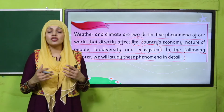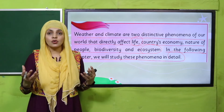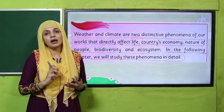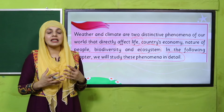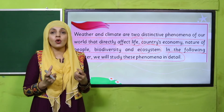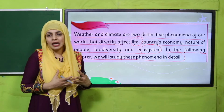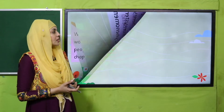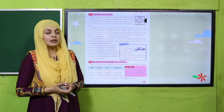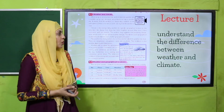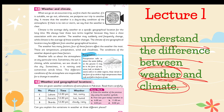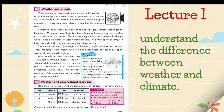Weather aur climate dono jo hain woh aisa phenomena hain — ek toh ye dono alag hain, theek hai, ye ek jaise nahi hote, they are totally different. Bachon ko pata hona chahiye ki dono totally different hain. In mein kya difference hai, bachche jo hai weather aur climate ki difference ke baare mein Lecture Number One mein jaanenge.